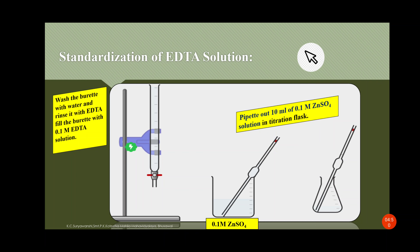The next part is standardization of EDTA solution. The EDTA has an approximate molarity of 0.1 molar, and we need to find the exact molarity. This process is called standardization — to know the exact concentration of the solution. Wash the burette with distilled water, rinse it with EDTA, and fill the burette with 0.1 molar EDTA solution. Then pipette out 10 ml of 0.1 molar zinc sulfate solution into a titration flask.